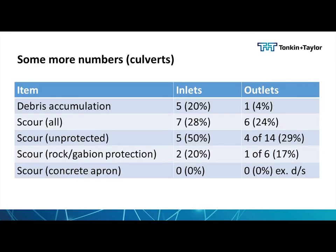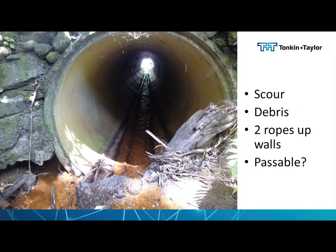In terms of debris, 20% of the culverts had significant debris at the inlet and very few at the outlet, which makes sense — there's a constriction and everything gets blocked at the upstream end. An interesting finding was scour immediately at the pipe inlet and outlet: half of the unprotected culverts had scour at the inlet and a similar number at the outlet. By comparison, where a concrete apron had been used, there was none — though there's a slight caveat on that.